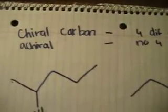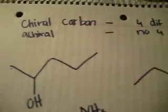Let's first define what a chirocarbon is. A chirocarbon is a carbon that is attached to four different groups. And a non-chiro carbon is one that doesn't have four different groups attached to it. Let's go over some examples.